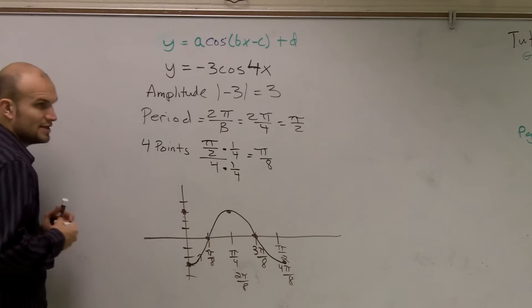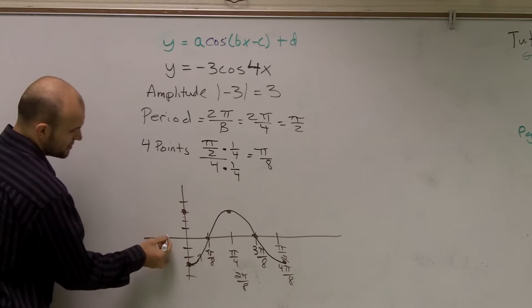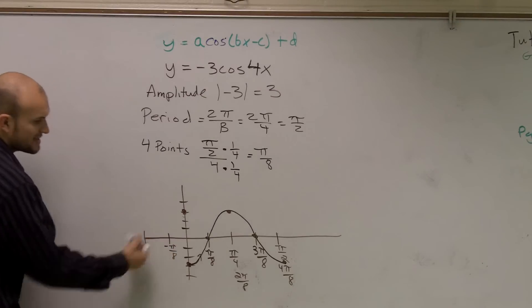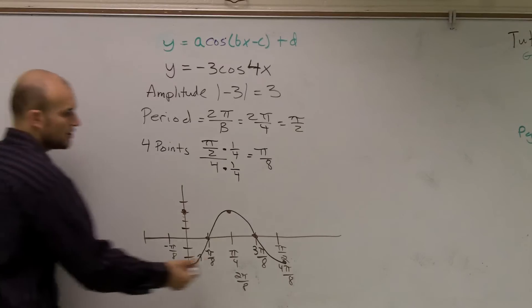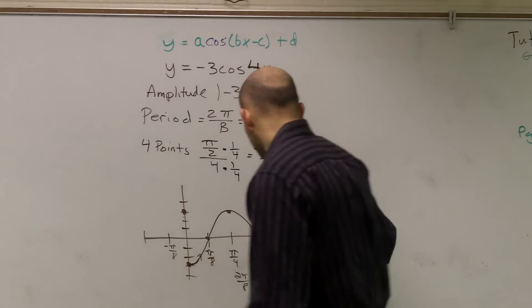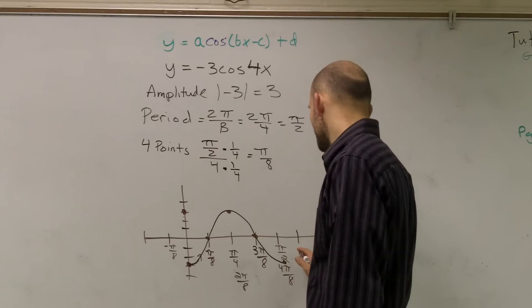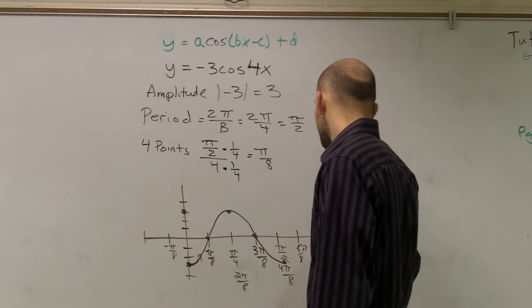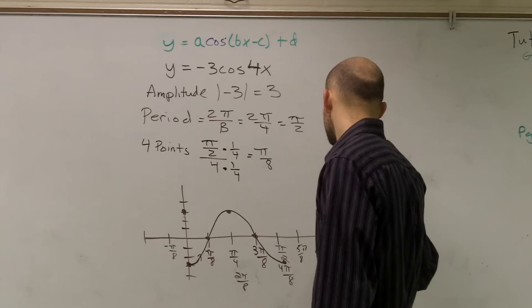Your next couple periods, you can go in either direction. You can go in the negative direction, so do negative π over 8 and do the exact same thing just in the negative direction. Or you can continue, keep on adding π over 8. So this would be 5π over 8, 6π over 8.